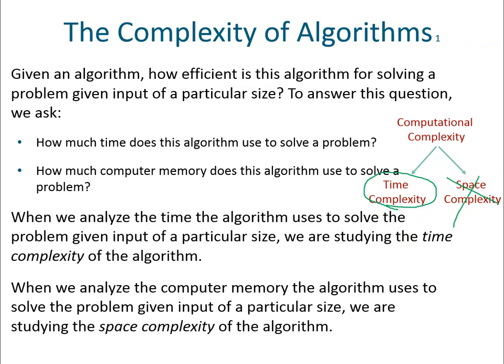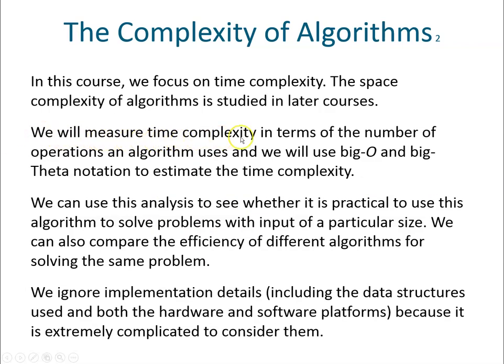Time complexity — the efficiency of an algorithm — is based on the input as well. In computer science we usually consider what would be the efficiency of the algorithm when the input is very large. We are not too concerned with what the efficiency would be for a very small input size. We will measure time complexity in terms of the number of operations an algorithm uses — such as comparisons, addition of integers, multiplication of integers, and division of integers. Any basic operation will be taken into account.